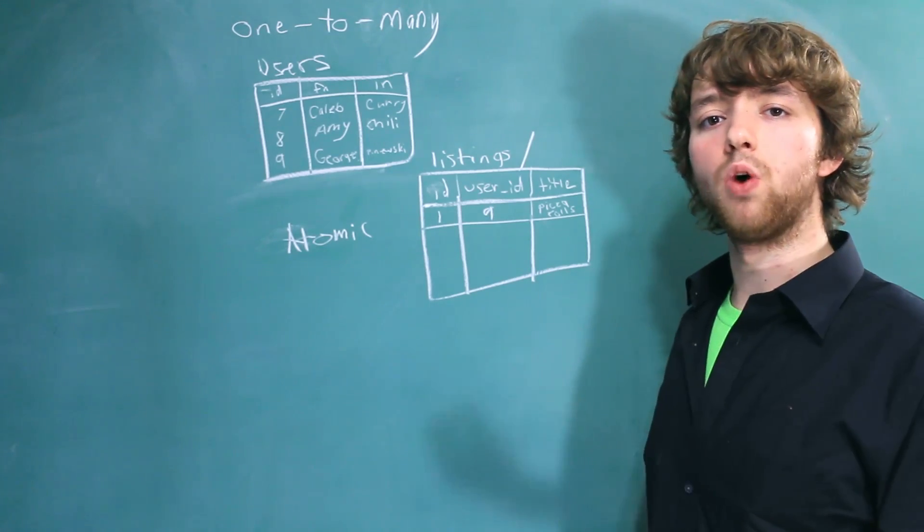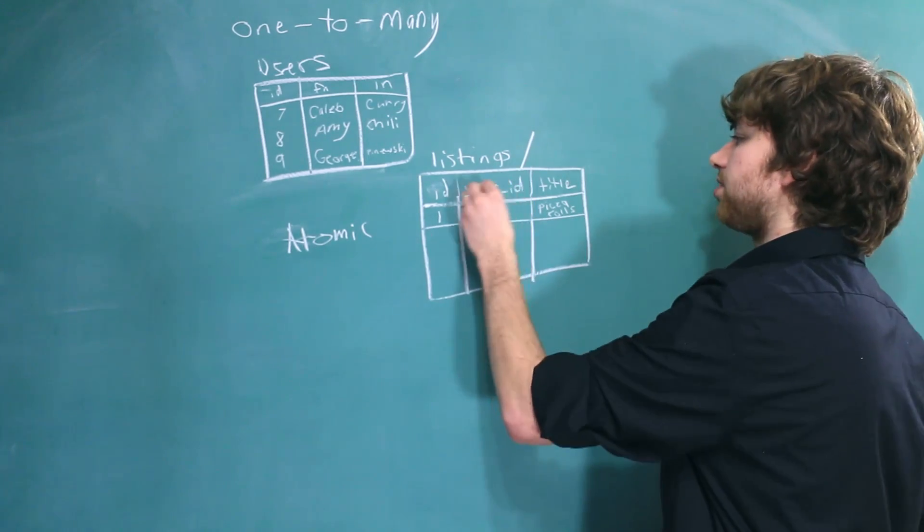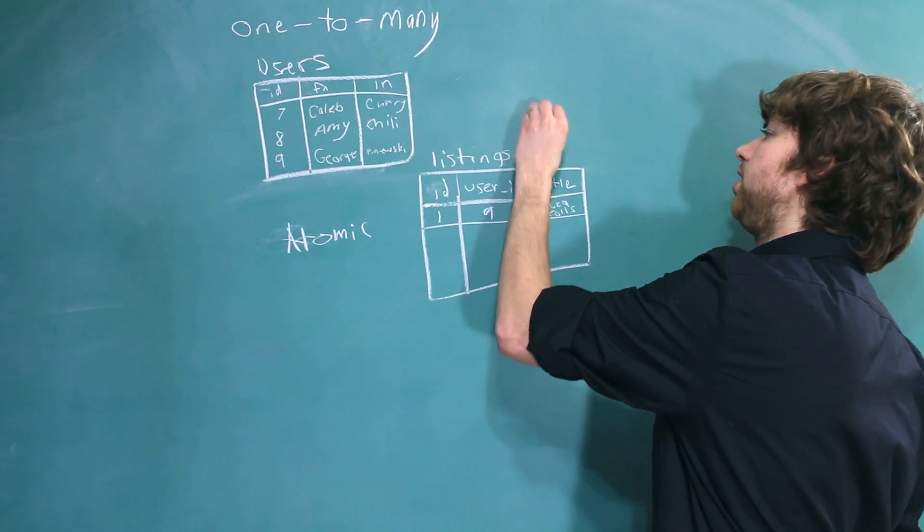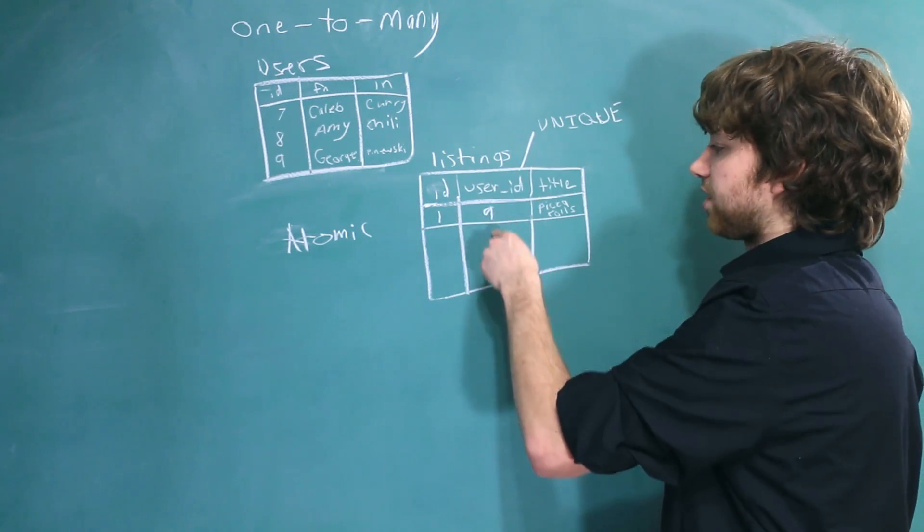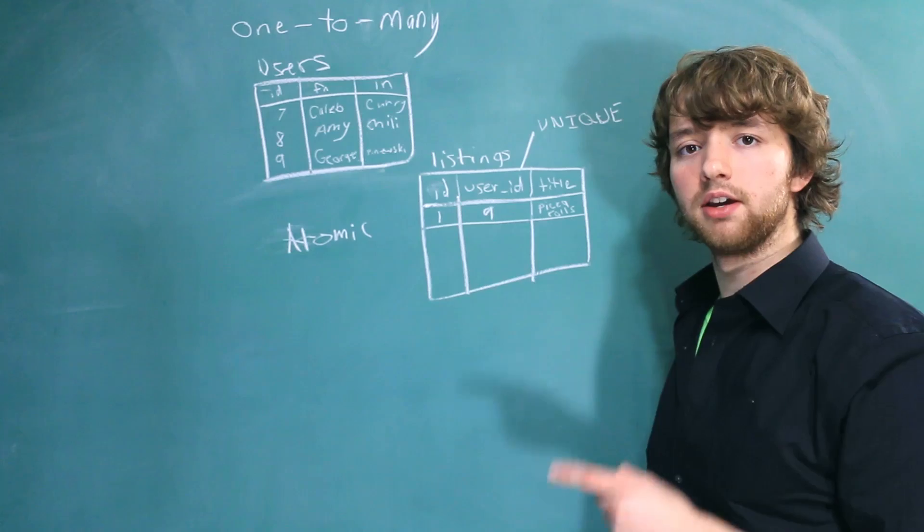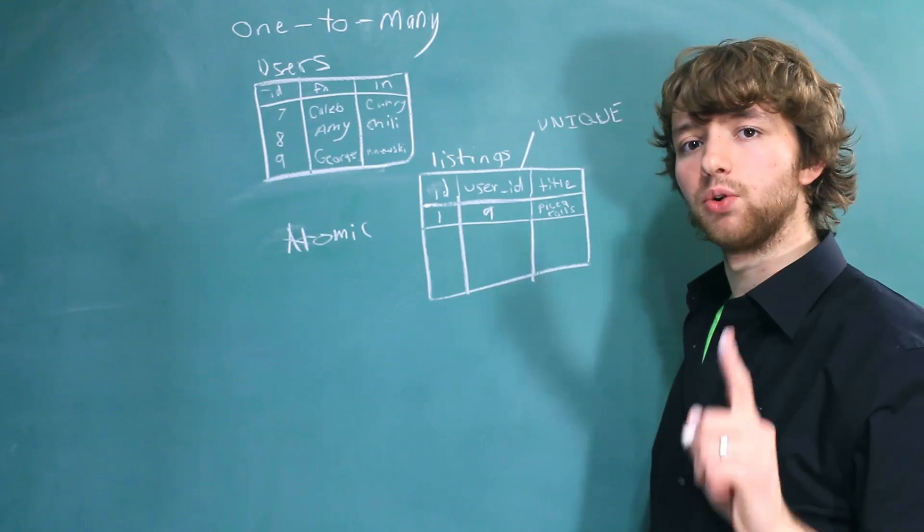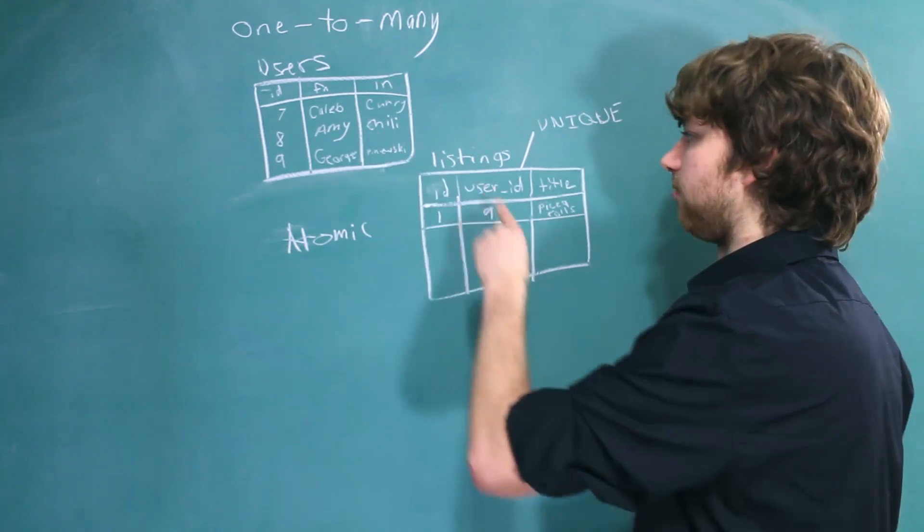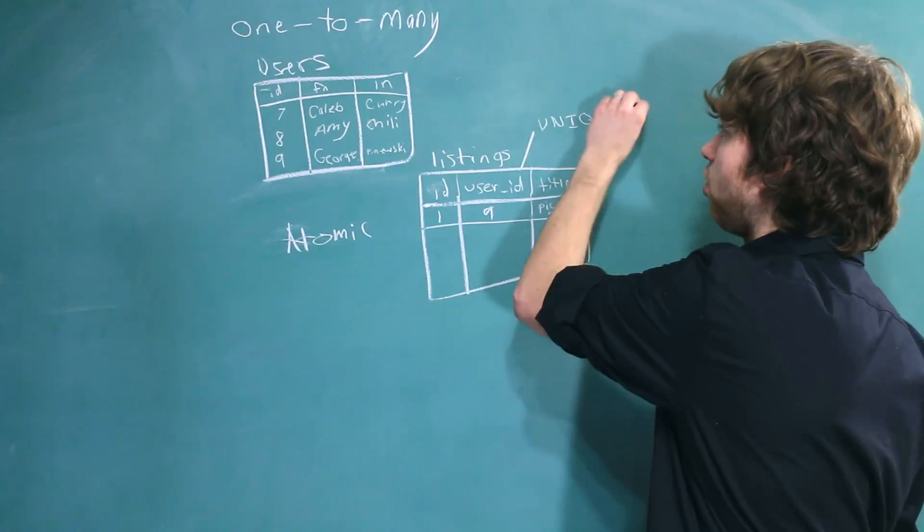Now if we wanted to have a one-to-one relationship, all we would do is make this user ID column unique. That would force every single row to be unique, so a user could only have one listing. But we don't want to do that. We want it so that a user can have multiple listings. So we don't make this unique.